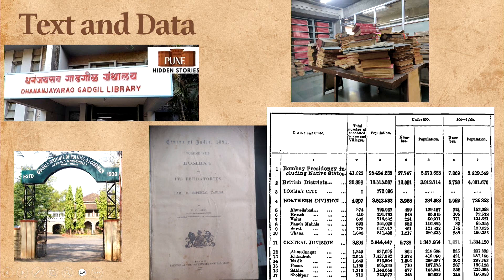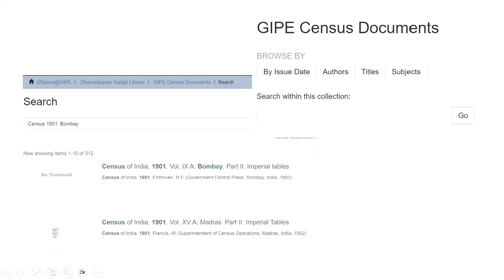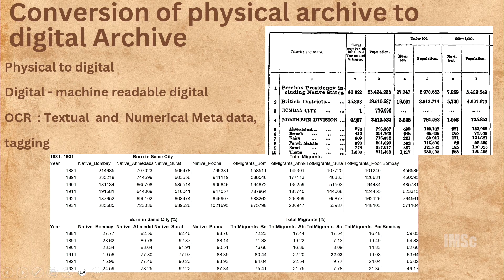Second-level conversion is absolutely needed if you want to make it a usable format. We did that partly initially by manually entering numbers — primarily for analysis of migration in the Bombay Presidency, Madras, and other places. Later, we also found AI tools to extract tables out of these scanned images. This is the digital archive of the Gokhale Institute. Thanks to this analysis, we got 150 years of data — population data, migration data, literacy data — and could tabulate textual and numerical metadata.